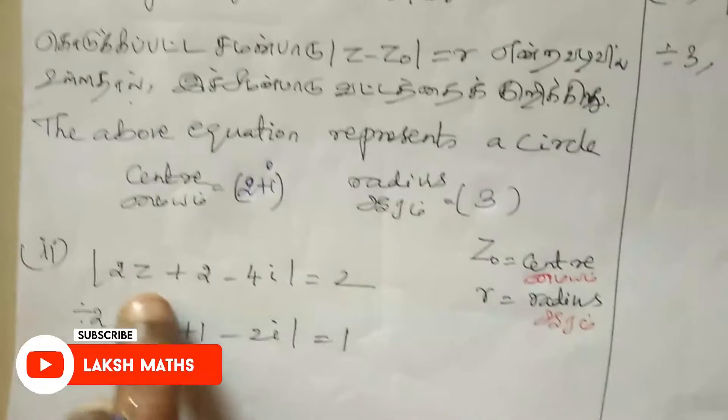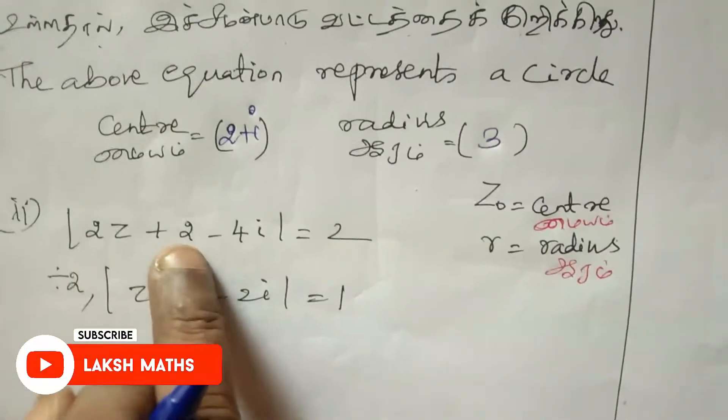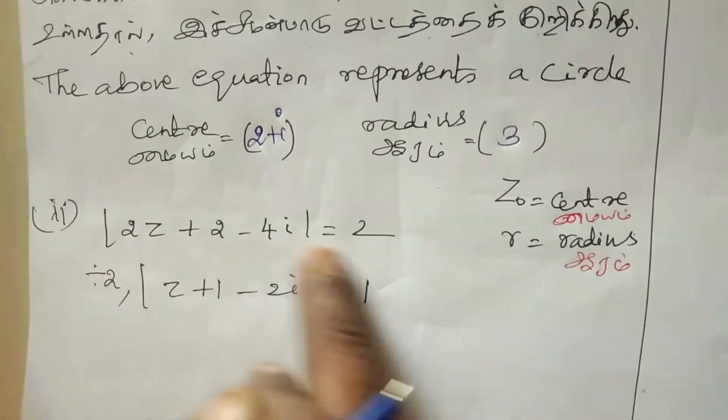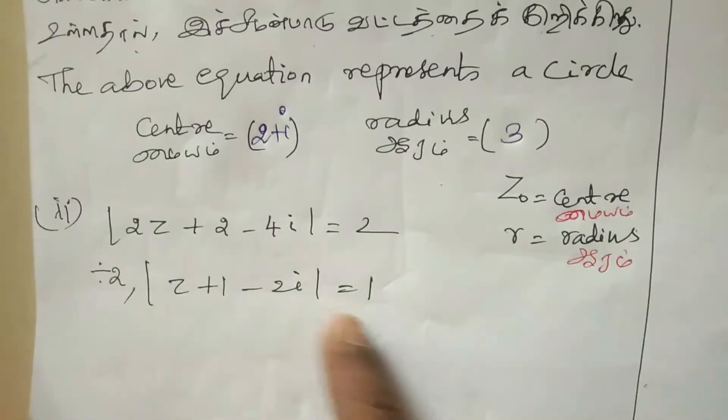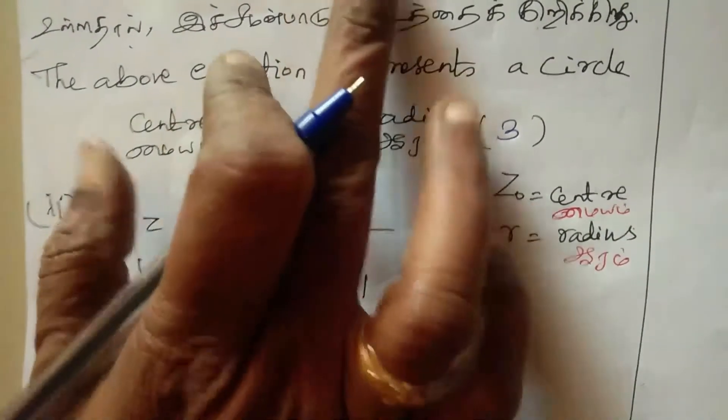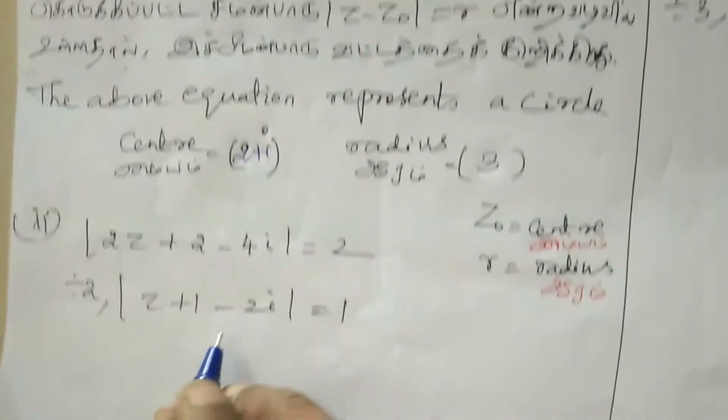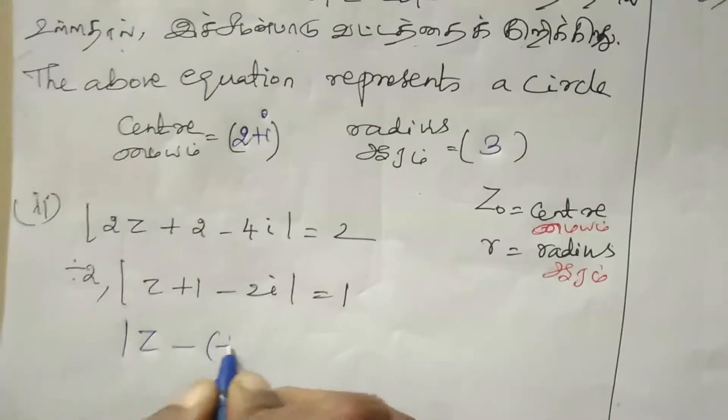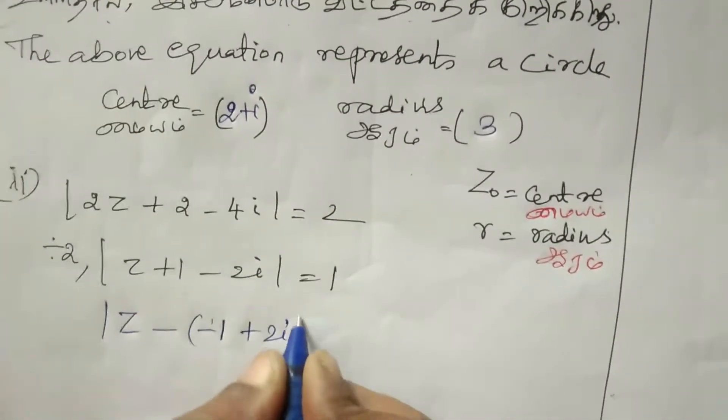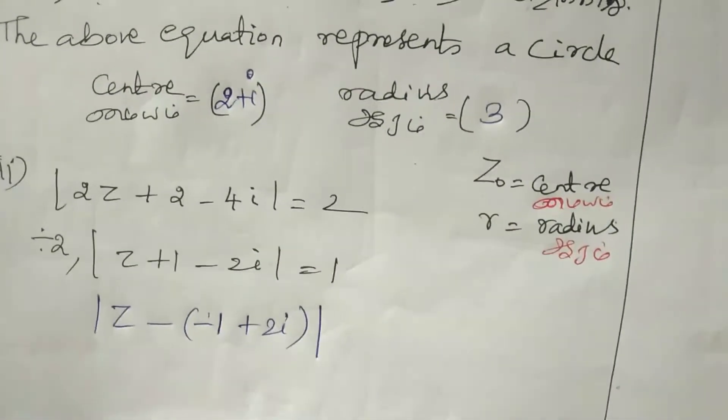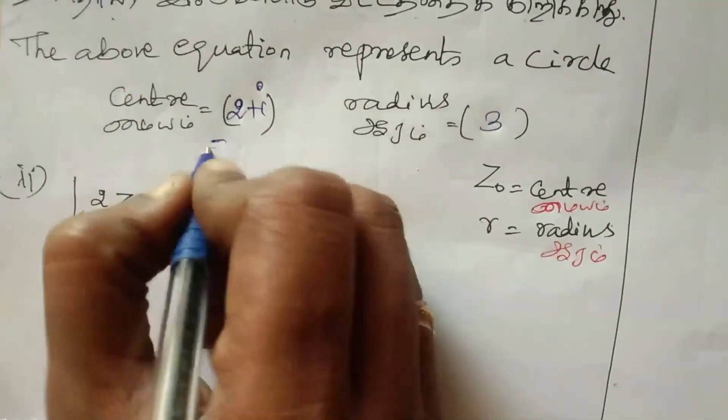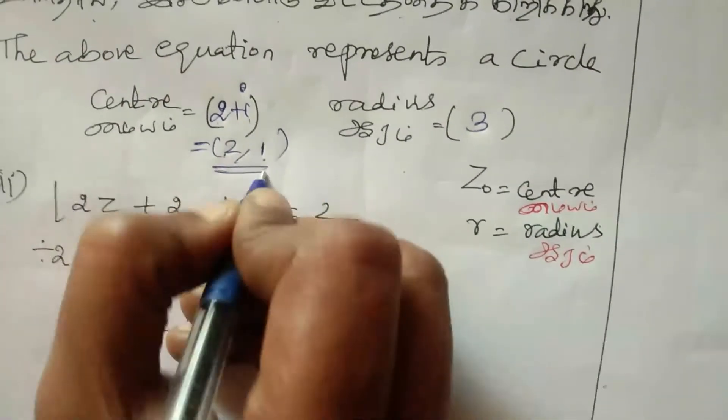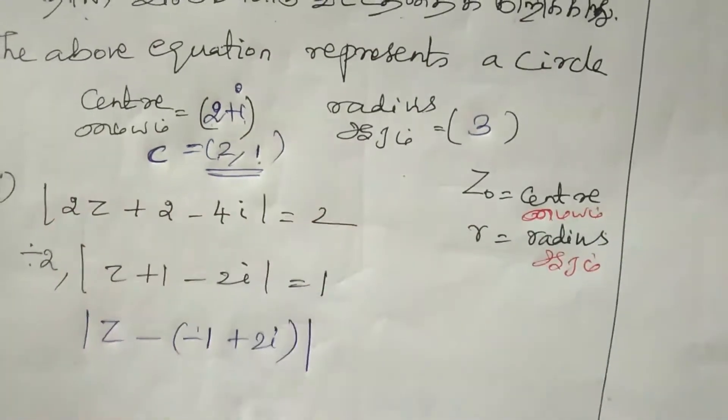Next: modulus of 2Z plus 2 minus 4I equal to 2. Divide by coefficient 2. Z plus 1 minus 2I equal to 1. This represents the circle with Z minus Z not form.